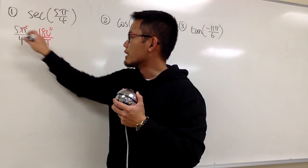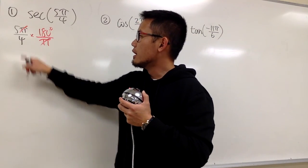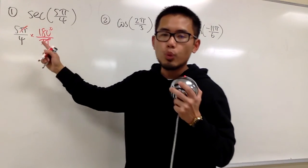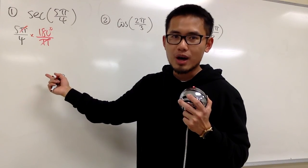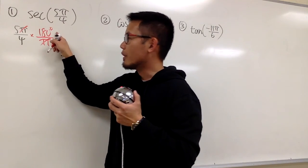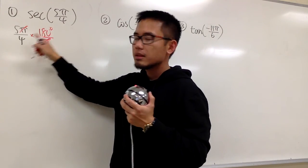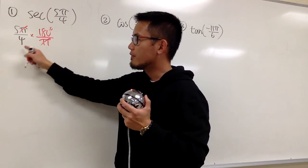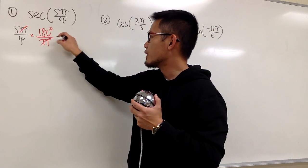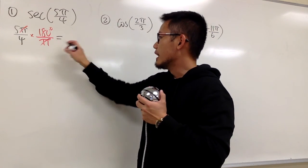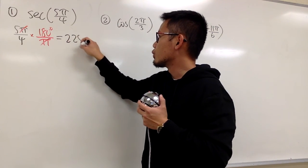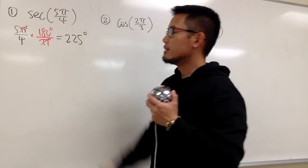The π and π cancel right away, and now you can just do the computation. You can do 5 times 180 and then divide by 4. You will end up with 225 degrees.